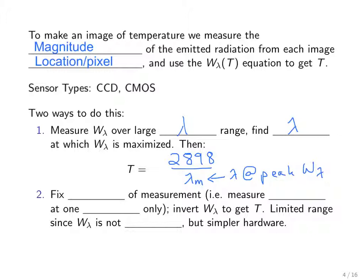We can use the fixed relationship that temperature equals 2898 divided by lambda_m — the lambda at which W_lambda(T) is maximum. So if you measure W_lambda over a large lambda range, you get a curve as a function of lambda, and you find the peak lambda. That gives you lambda sub m, from which you extract temperature.